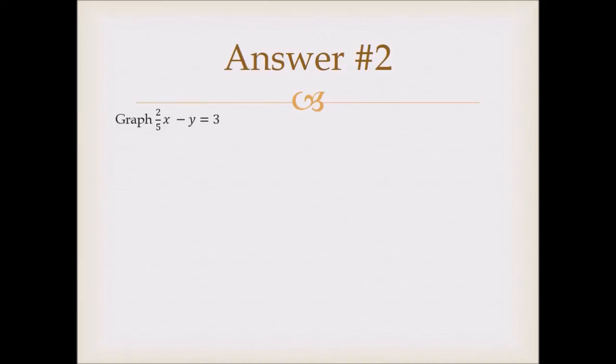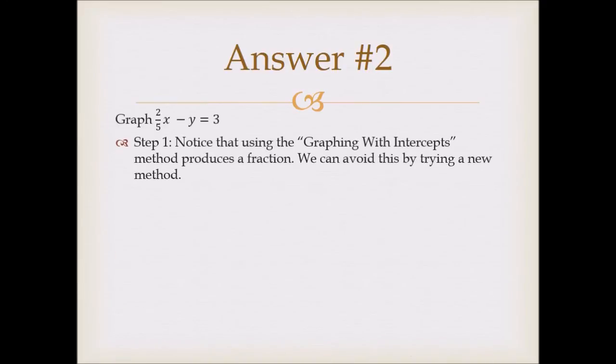Answer number 2. This time we have 2 fifths x minus y equals 3. So notice that this is not going to be very easy with the intercept method. Because if we cover them, we're going to get a fraction for our answer. So in this case, it's honestly better to use a different method. And we're going to use the y-intercept method. So notice that we're going to have to rearrange this. So let's isolate y. So we get negative y equals negative 2 fifths x plus 3. If you're wondering how I did that, I just subtracted the 2 fifths x to the other side of the equal sign.